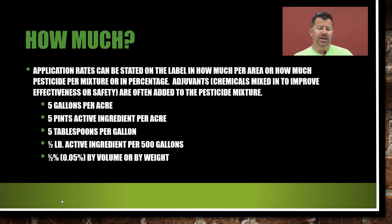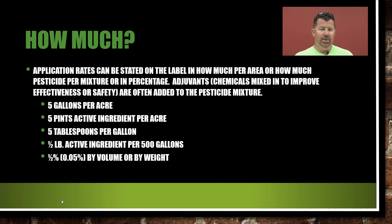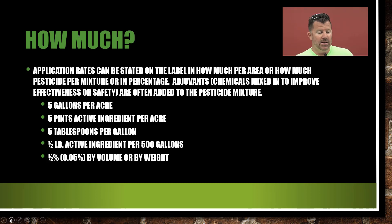Application rates can be stated on the label as how much per area, how much pesticide per mixture, or even as a percentage. Adjuvants — chemicals mixed to improve effectiveness or safety — are often added to the pesticide mixture as well, so you've got to take that into consideration. On the label you're going to see things such as five gallons per acre, five pounds active ingredient per acre, five tablespoons per gallon, half a pound active ingredient per 500 gallons, or half a percent by volume or by weight. You may also see solutions like a 2% or 6% solution as shown in the landscape pesticide calculations math problem.